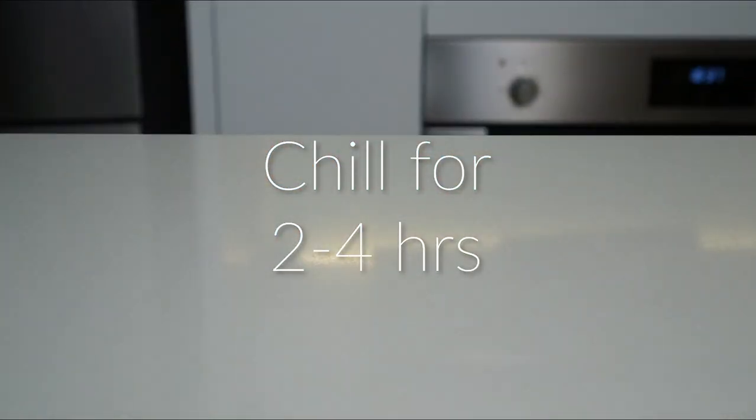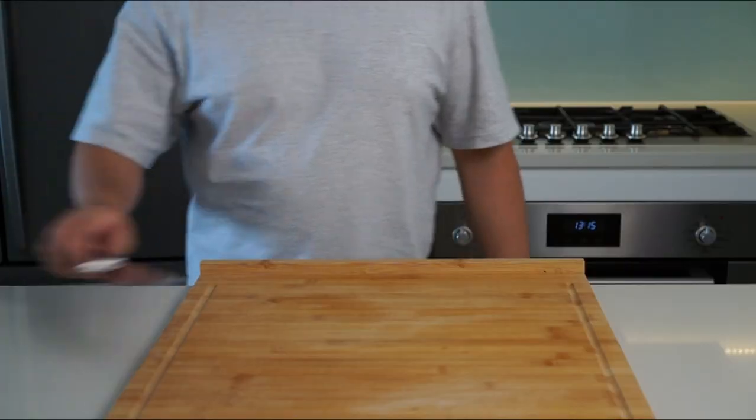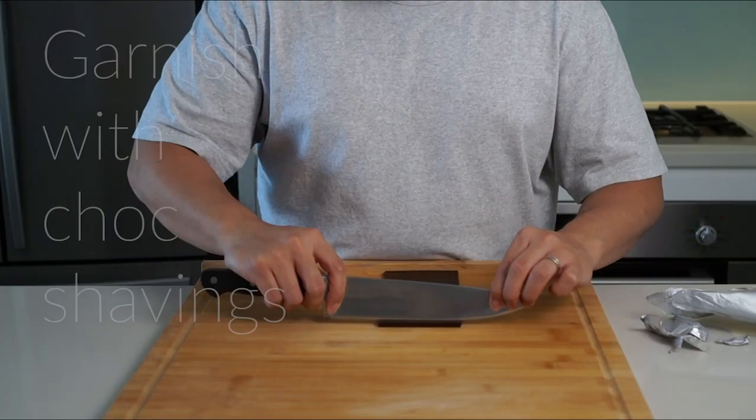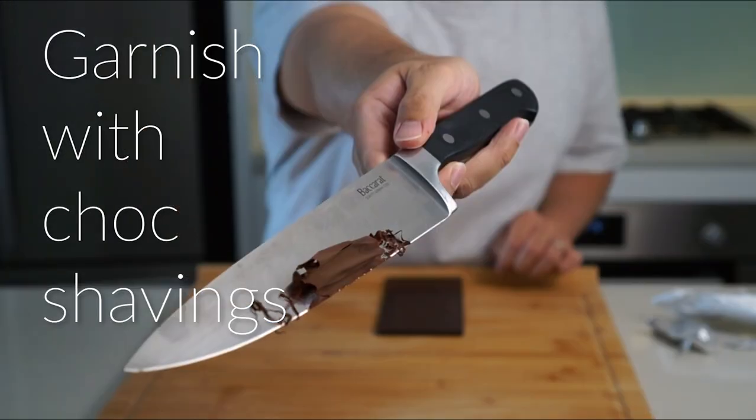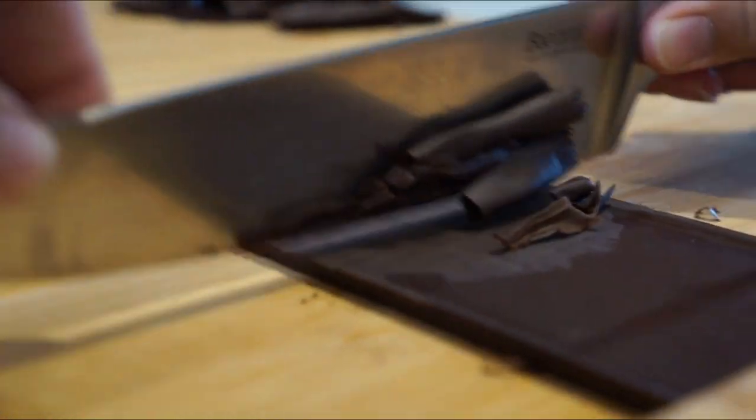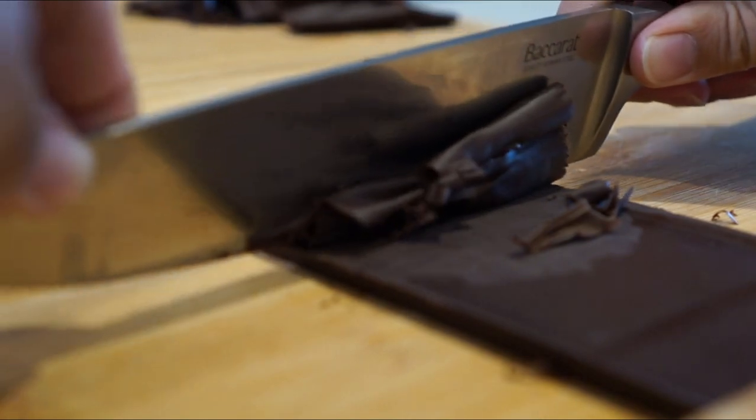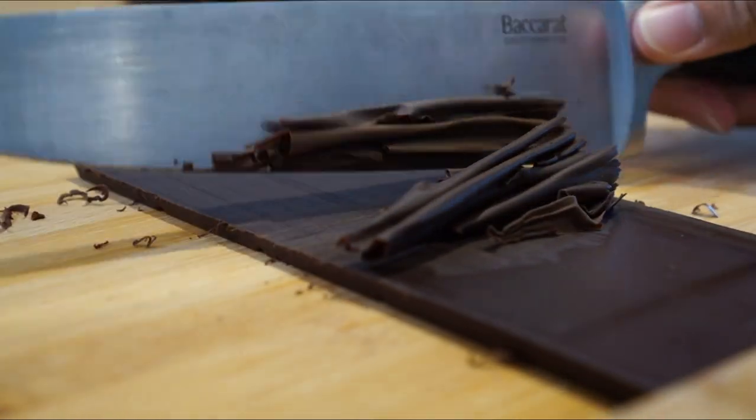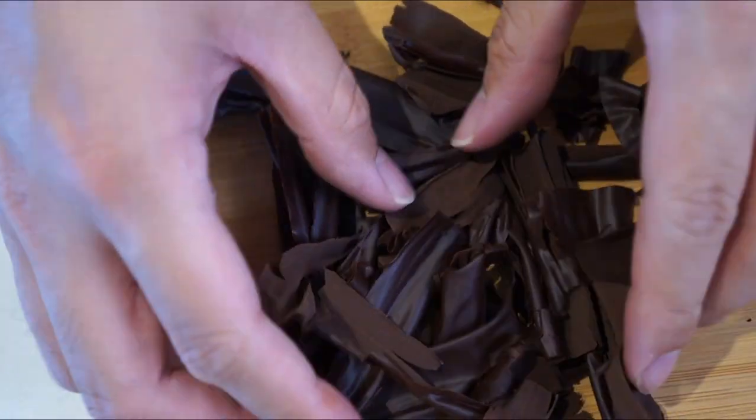To top off the mousse, we're going to prepare a quick little garnish. Here we'll be making some shaved chocolate. All you need is a chocolate bar. Turn it upside down, hold both edges of the knife firmly, and scrape perpendicular to the surface to create some chocolate shavings.